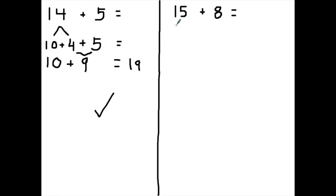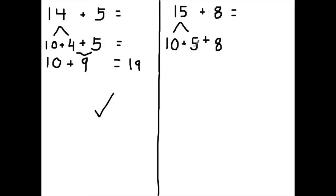Now let's look at a problem that's going to give us a little more difficulty. We see 15 here, which is the same thing as saying 1 ten and 5 more, so we take the same approach and take the 10 out. Now I see 5 and 8. I immediately know that 5 and 8 are going to be more than 10, because 5 plus 5 gives me 10, and I know 8 plus 2 would give me 10. So 5 plus 8 is going to give me more than 10, and what I'd like to do is make 10.